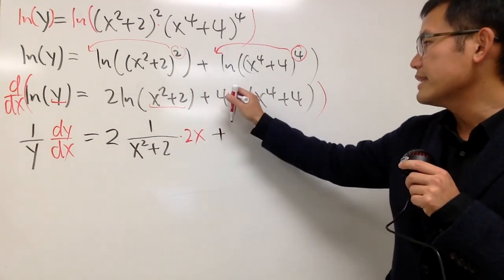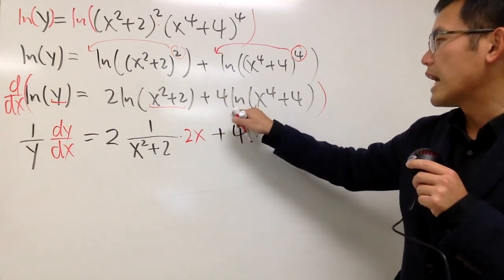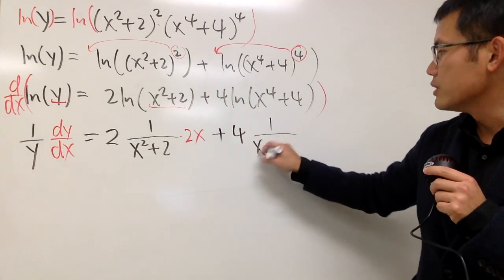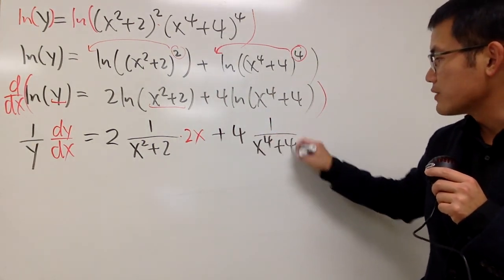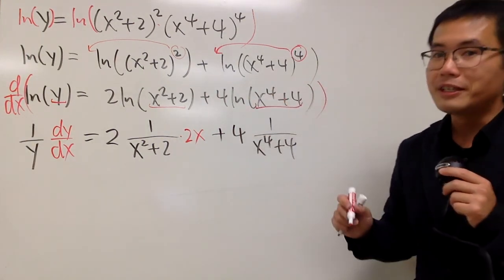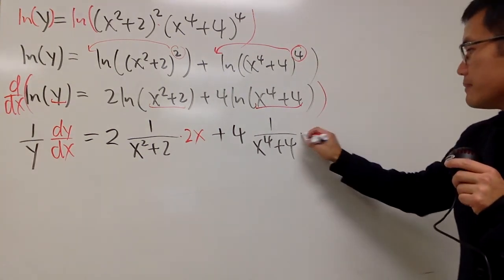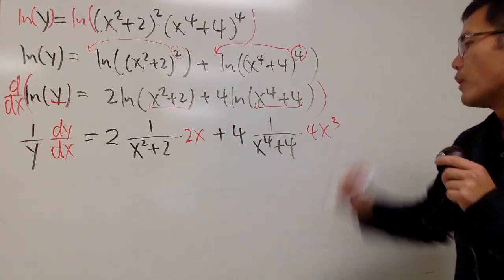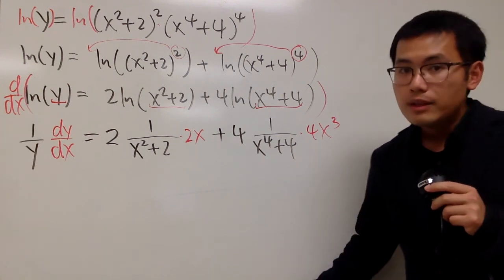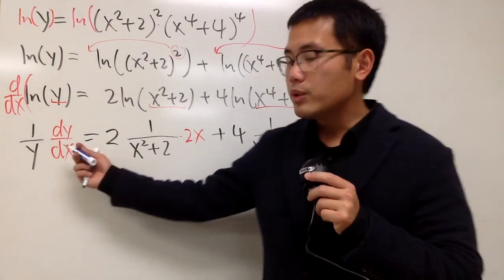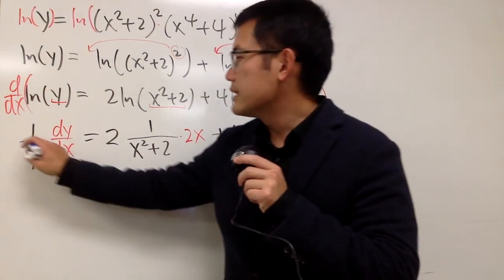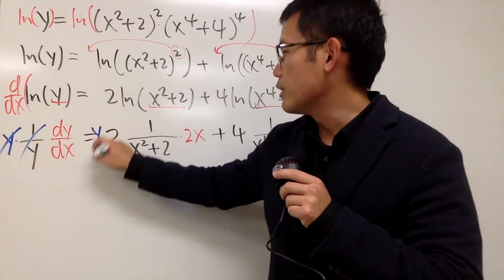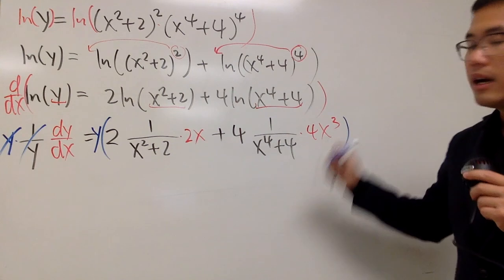Similarly, for the second term, we bring down the 4, times the derivative of that expression. It's 1 over the inside, which is x to the fourth power plus 4, and then by the chain rule, multiply by the derivative of x to the fourth power plus 4, which is 4x to the third power. Now, we want to get dy/dx by itself, so let's multiply both sides by y so they cancel on the left, and multiply y entirely on the right hand side.